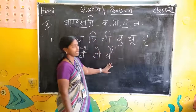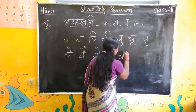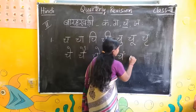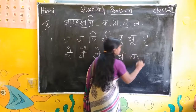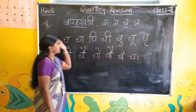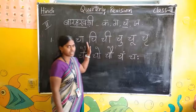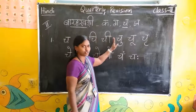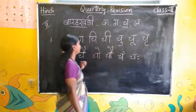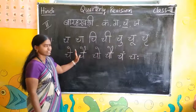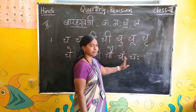Okay, next — Cham with Ek Bindi. Next, Chaha — Misalga. Once, repeat children: Cha, Cha, Chi, Chi, Chu, Chu, Chu, Che, Chai, Cho, Chau, Cham, Chaha.